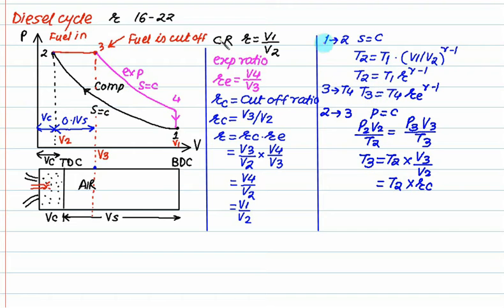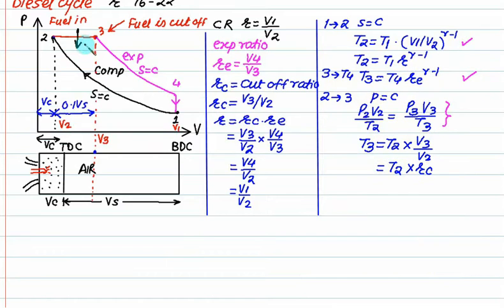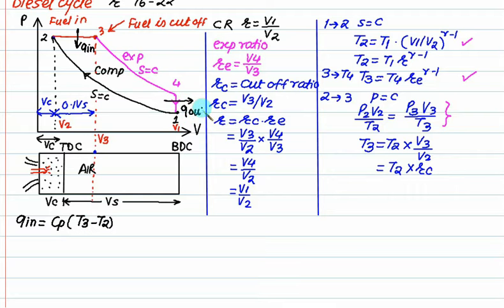The isentropic relation is only applicable for isentropic processes. For heat input, q_in equals cp·(t3 − t2) at constant pressure, plus the constant volume process. So q_out equals cv·(t4 − t1). In the Otto cycle both heat transfers use cv, but this time one uses cp and the other cv.